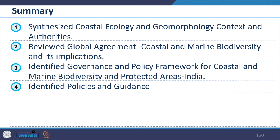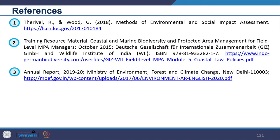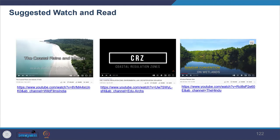In summary, today we covered the coastal ecological and geomorphological context and the authorities involved, reviewed global agreements on coastal and marine biodiversity and their implications, and looked at the policy framework for coastal marine biodiversity and protected areas, as well as policies and guidelines available at the international level. Our coverage is limited and references and suggested readings have been provided for further detail.